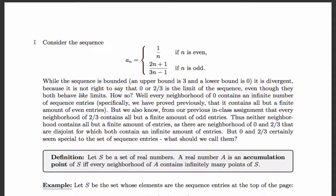Hello everyone. Let's analyze. So let's consider the sequence obtained by taking two convergent sequences and splicing them together. We know from a previous set of notes that the sequence 1 over n converges to 0. We also know from an in-class assignment that the sequence (2n+1)/(3n-1) converges to 2/3. So if we let a_n be one of those convergent sequence entries when n is even and the other sequence entries when n is odd, then the limits of those two sequences we put together are not limits of a_n.